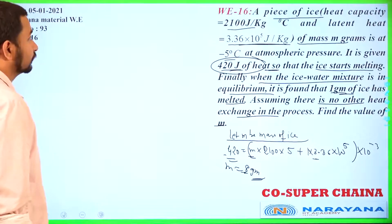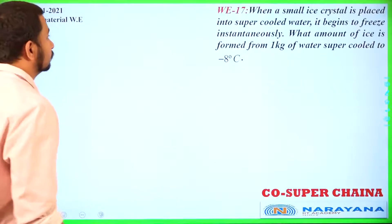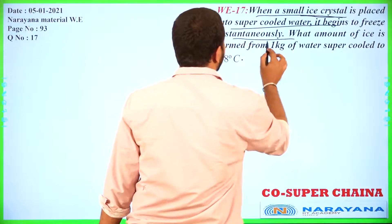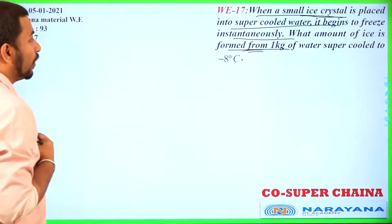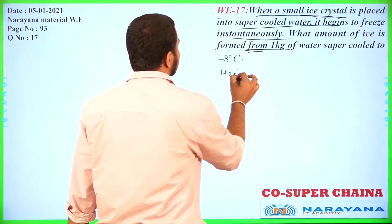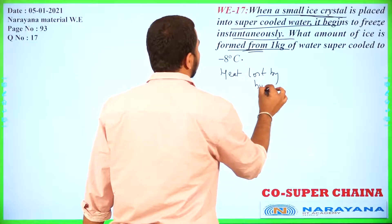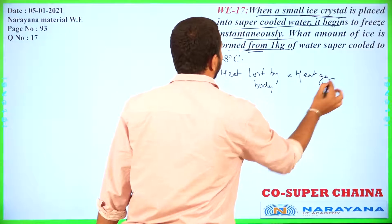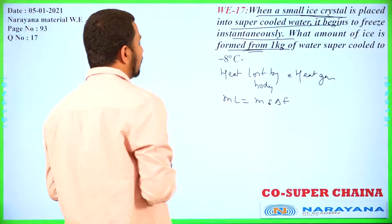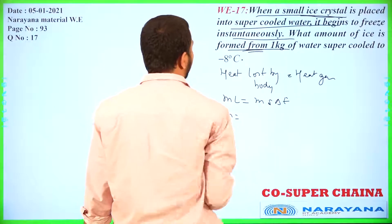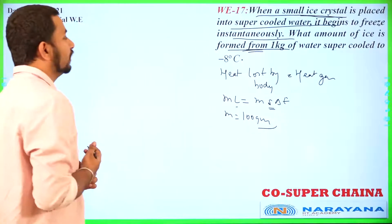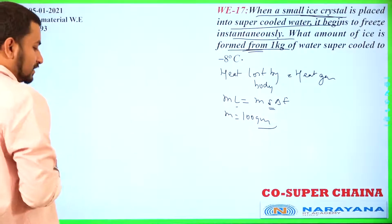When a small ice crystal is placed into supercooled water, what is the amount of ice formed when 1 kg of water is supercooled to −8°C? Heat lost equals heat gained: ML is equated with ms delta T. Substituting standard values of L and s, the mass m comes to 100 gram. That will be the answer of this question.